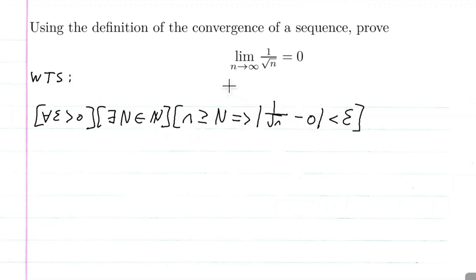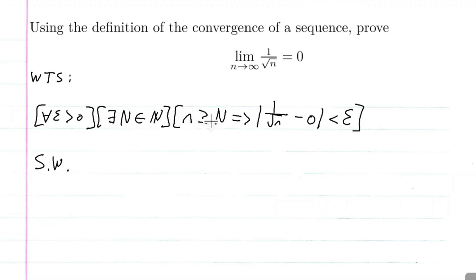So that's the basic idea of the limit of a sequence. First we're going to start off with some scratch work. We're going to start with what we sort of want and try to find this capital N. So let's go ahead and do: absolute value of one over the square root of n minus zero is less than epsilon.